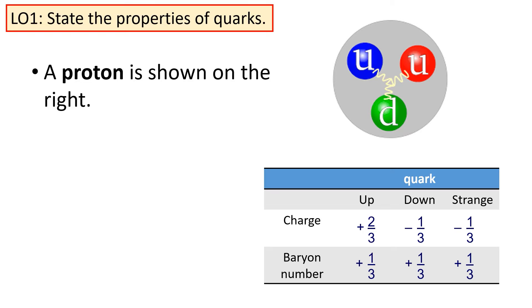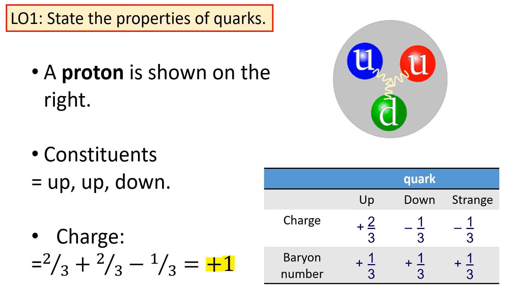A proton is shown on the right. A proton is one of the baryons, which means its constituents are three different quarks. Specifically, those three quarks are up, up, down. If we think about it, the proton has a charge of plus one, so the individual quark constituents must add up to a total of plus one. What we have is the two up quarks have a charge of plus two-thirds, and the down quark has a charge of minus a third, giving us an overall charge of plus one.